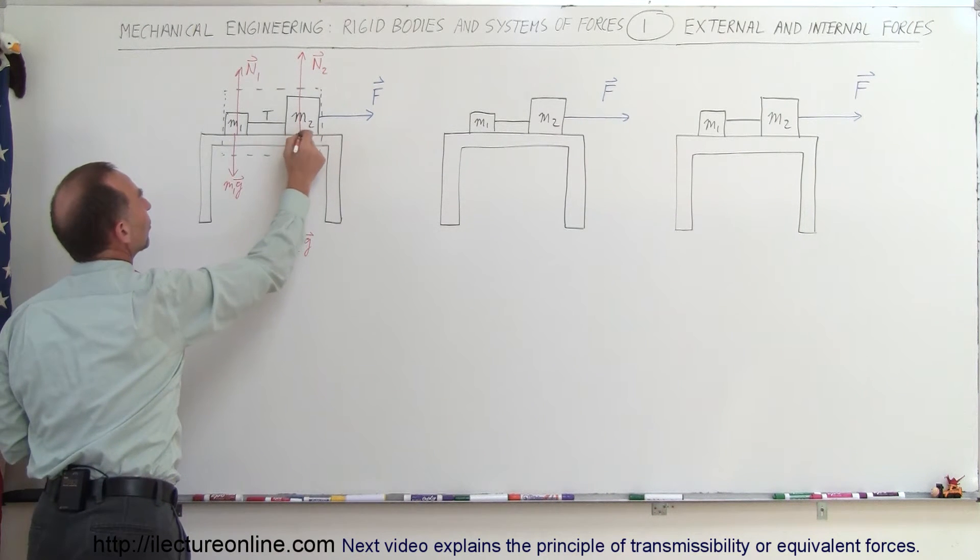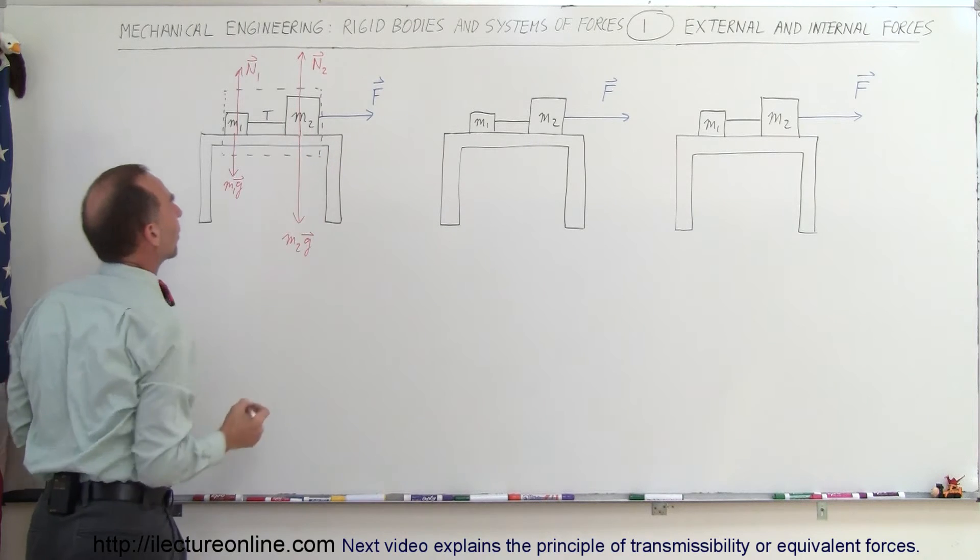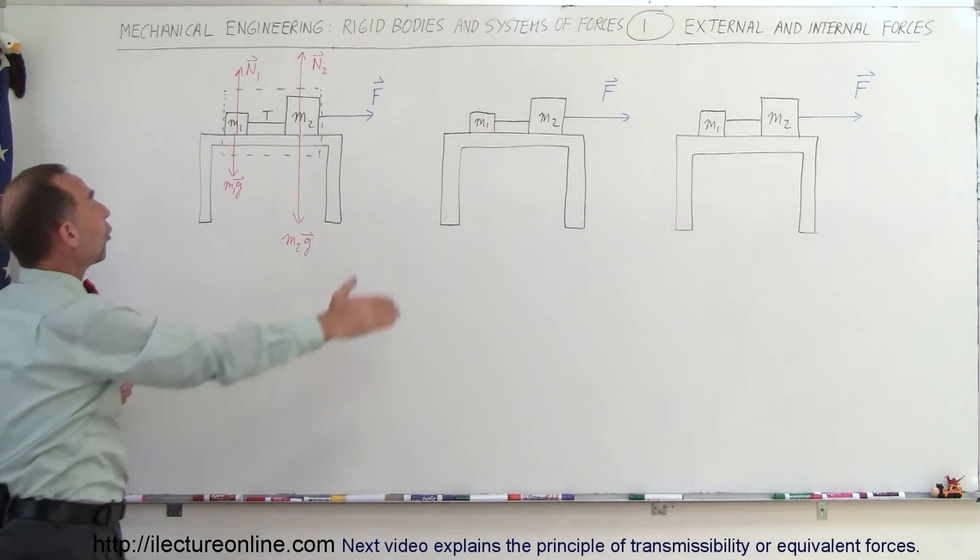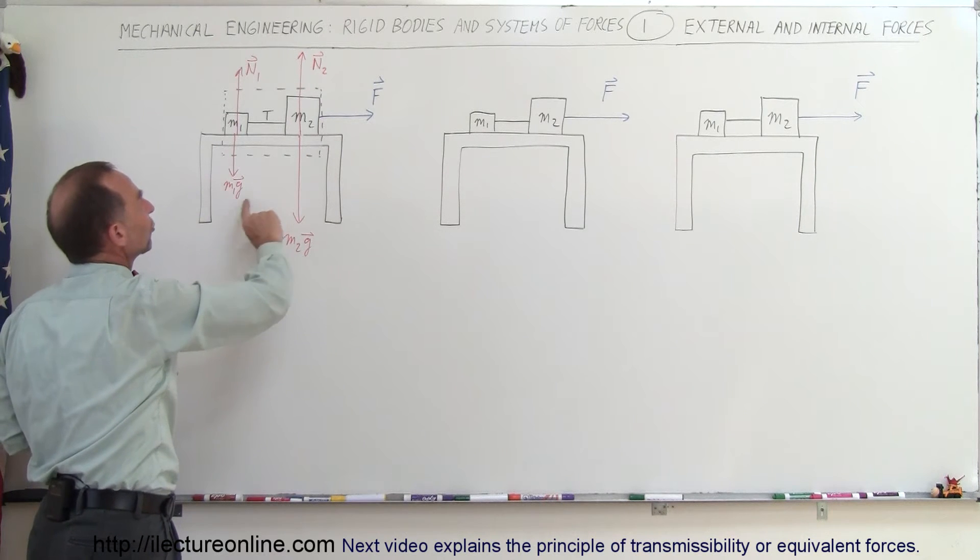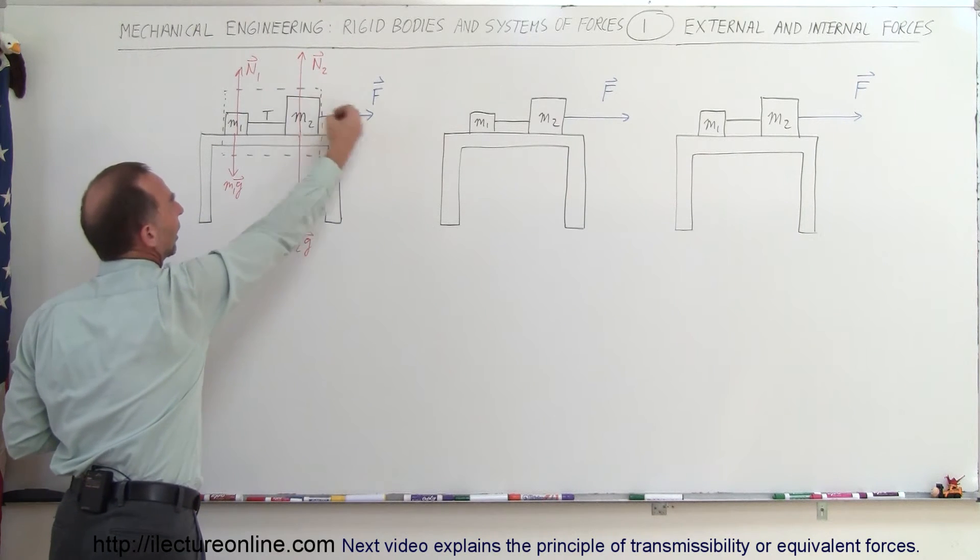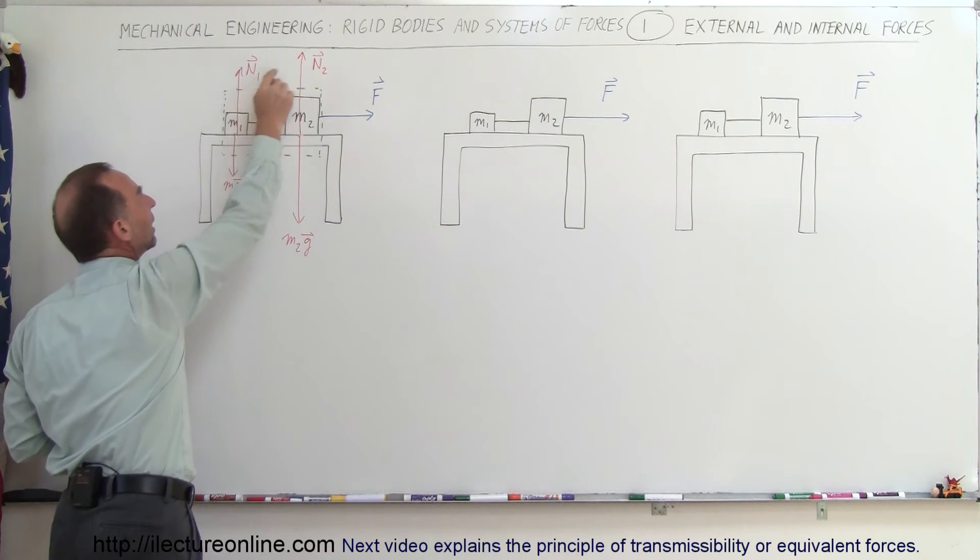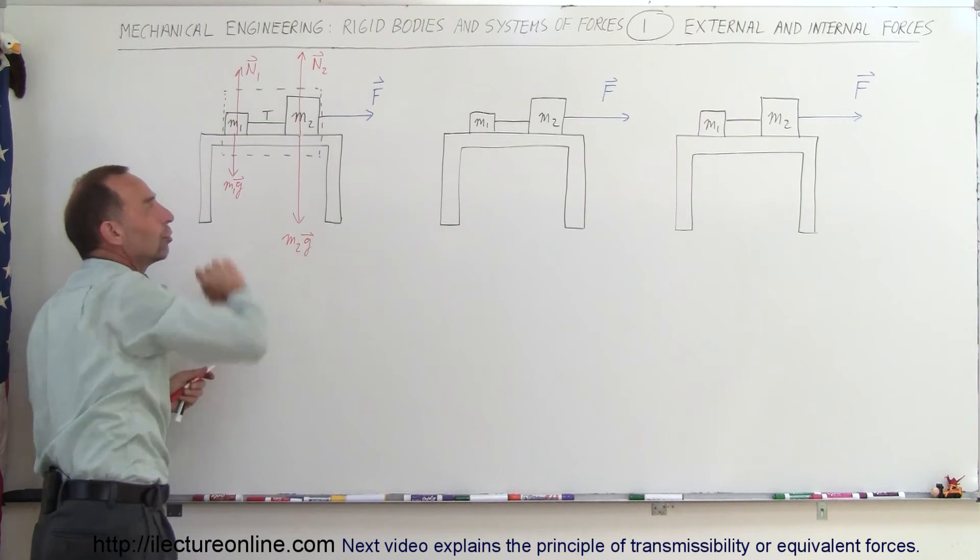So let me go ahead and separate those two a little bit so you can see that they're not part of the same force. Alright, so those are all the forces acting on the whole system. So there's five external forces. You have F pulling on the system. You have M1G, M2G, you have N1 and N2. So there's five external forces.